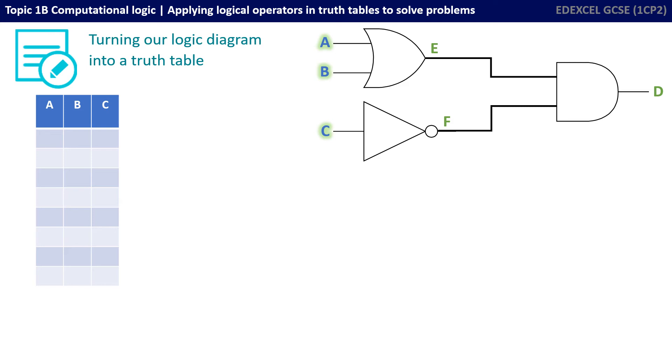Let's start with all the inputs, that's A, B and C. Well, that's nice and easy. We've constructed three columns in our truth table and we've labelled them A, B and C.